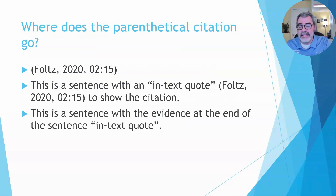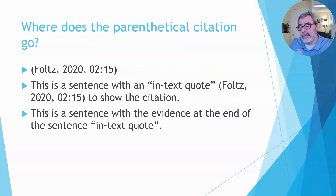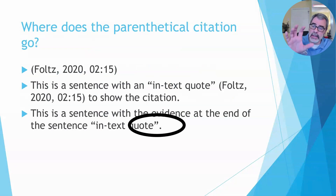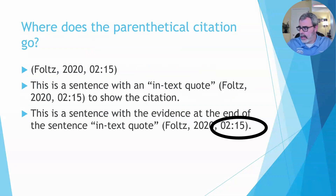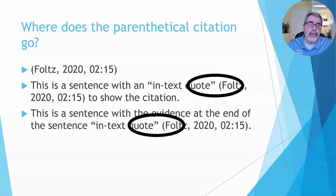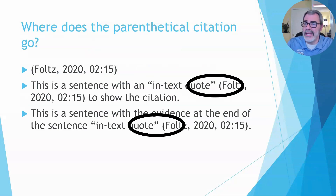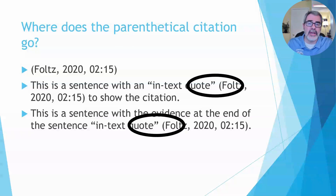What if the evidence is at the end of the sentence? We're going to do the same thing — still put the citation right after the piece of evidence. In this case it goes at the end of the sentence, outside the quotation mark but inside the period. The citation always has to be inside the sentence but not within the quotation mark. If you put it in the quotation mark, you're telling the reader that you're quoting the citation itself — that the citation is the words of the author — which would not be accurate.